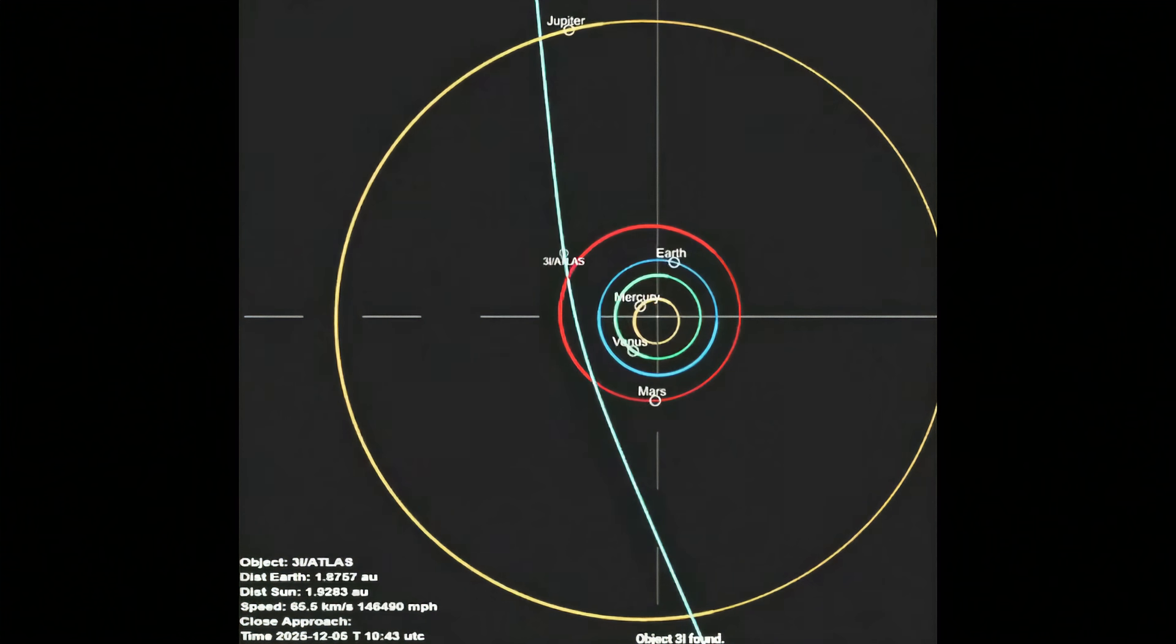The odds of a random interstellar object lining up so perfectly with our planetary plane are incredibly low, something like a 1 in 500 chance. It's like throwing a dart from across a football field and having it land perfectly flat on the 50-yard line. It's possible, sure, but it's eyebrow-raisingly precise. But the coincidences don't stop there.